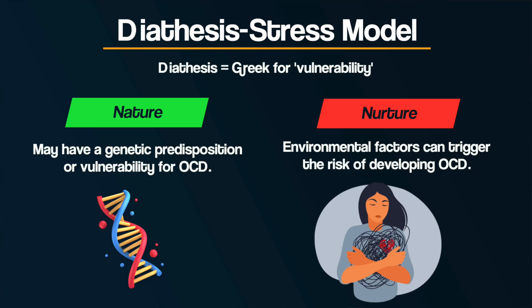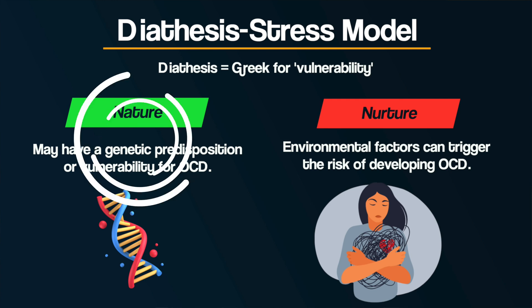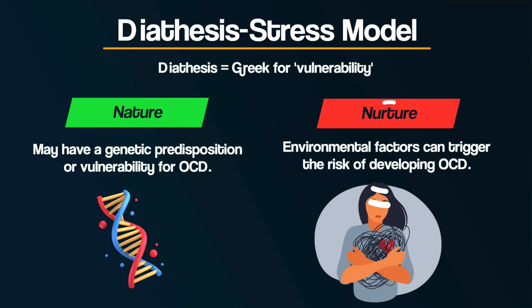In fact, a reductionist view ignores the complex interaction of many factors, which can be seen in the diathesis-stress model as an explanation of OCD — which considers how biological and environmental factors interact and affect one another. Therefore, it could be argued that simply focusing on lower-level reductionist explanations fails to fully consider the complexity of human behavior, as some behaviors can only really be investigated in the holistic context in which they occur.